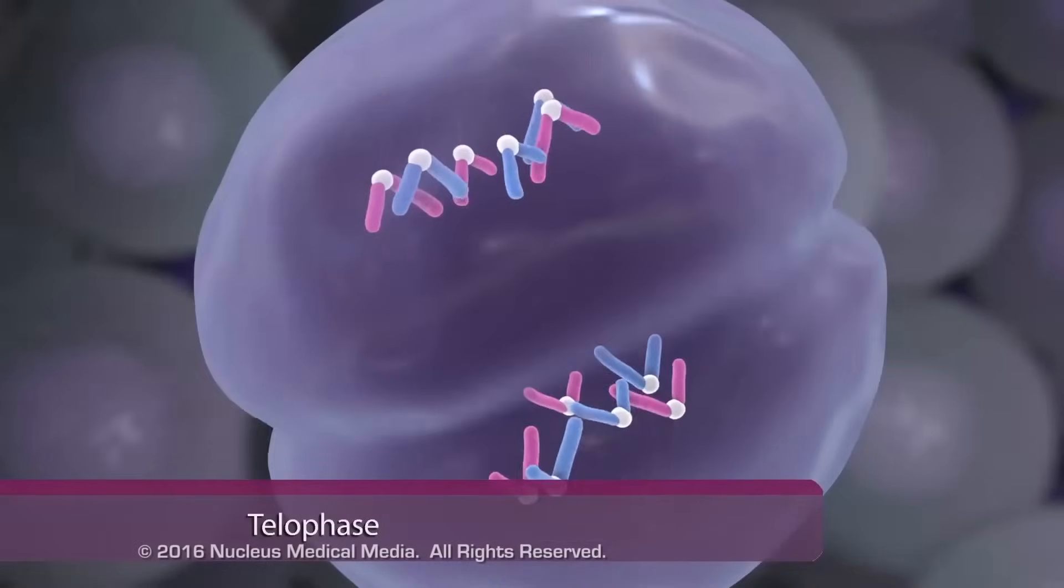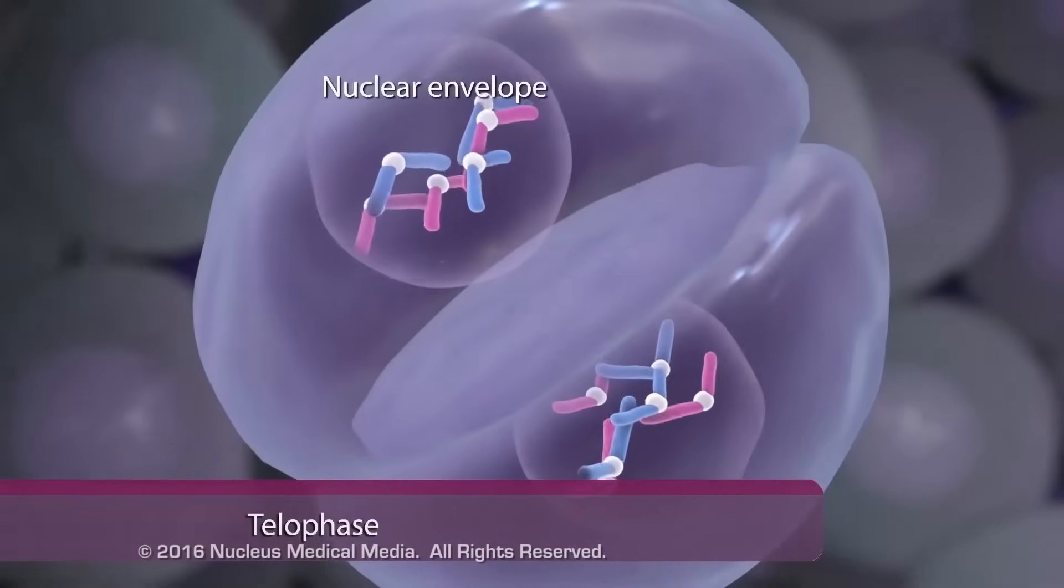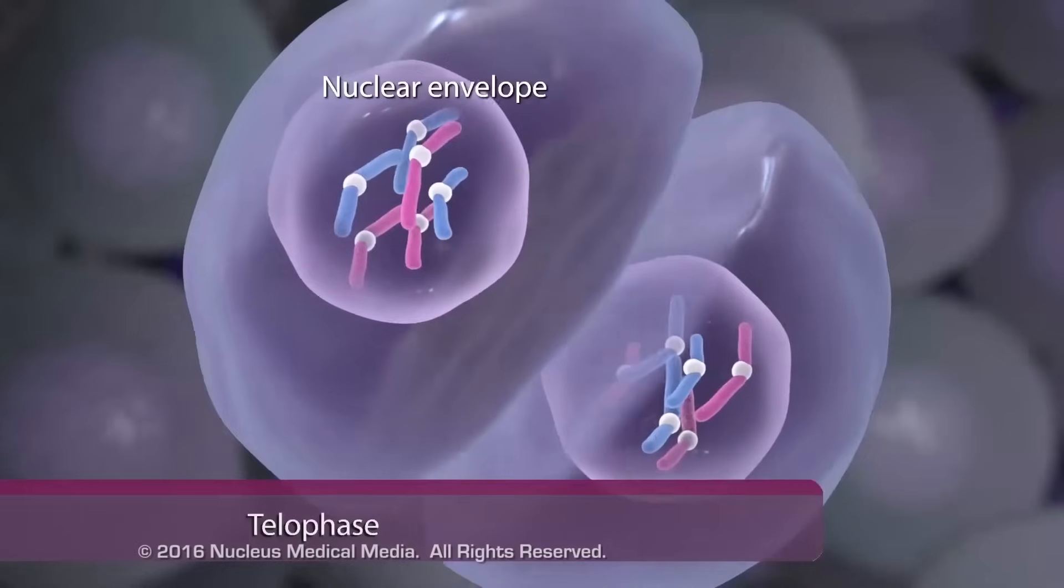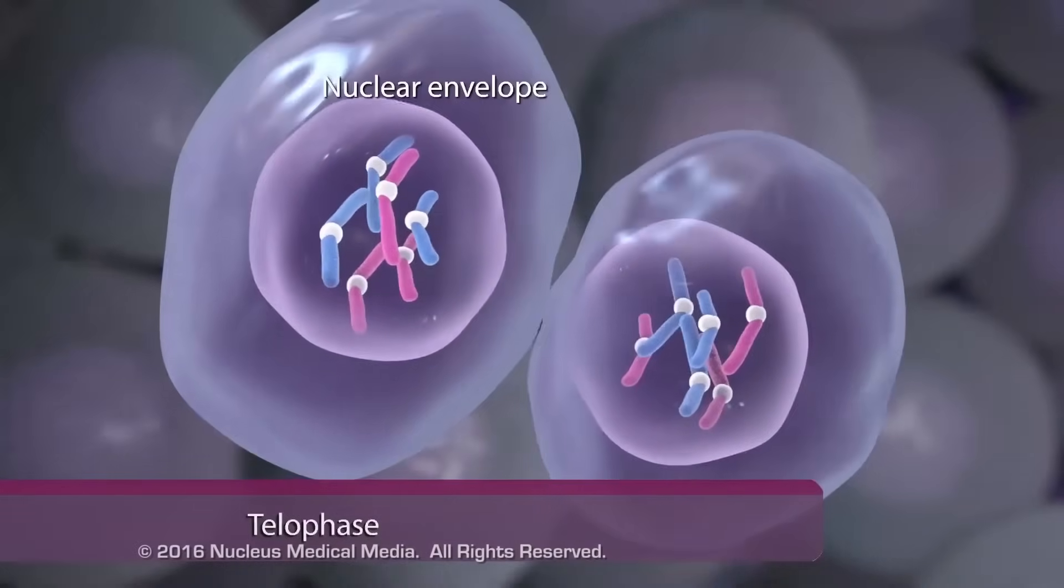During telophase, nuclear envelopes reform around the chromosomes as the cell finishes dividing.